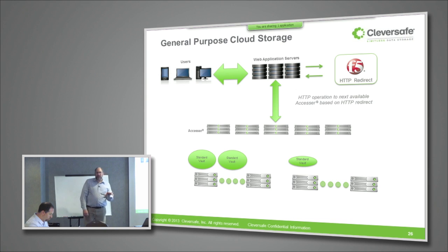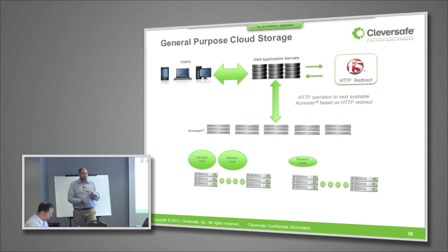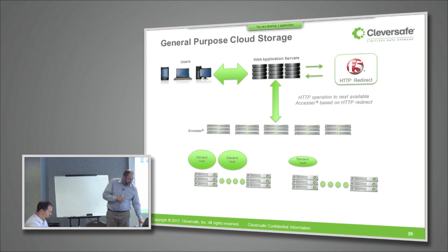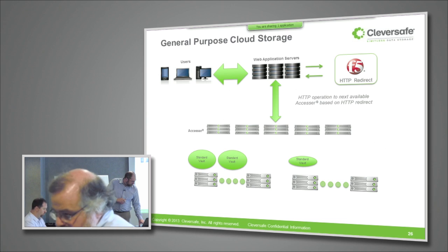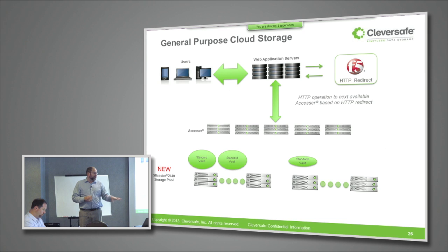To date, we've had really two different models of storage nodes that most of our customers use. These large-scale customers primarily use our high-density model, which we call the Slice Store 1440. It's a 4U storage server that can accommodate 48 drives of up to four terabytes each, so you can have 192 terabytes of storage per server. But for this workload, we found that the performance of the Slice Store 1440 wasn't fully up to what was sometimes required for this kind of application. So I'm going to talk about some new products that provide a higher level of performance.